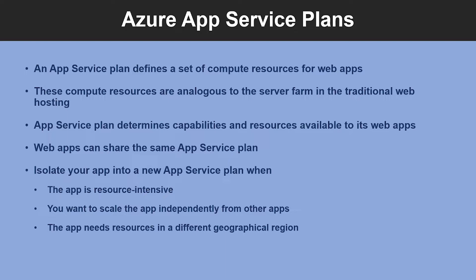Let us look into Azure App Service Plans. In Azure App Service, an app runs in an App Service Plan. An App Service Plan defines a set of compute resources for a web app to run. These compute resources are analogous to the server farm in conventional web hosting. One or more apps can be configured to run on the same computing resources. Each App Service Plan defines a region, a number of virtual machine instances, and size of virtual machine instances.